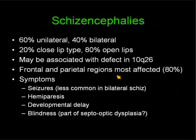Let's talk about schizencephaly. 60% are unilateral, 40% are bilateral. 20% are closed lip and 80% are open lip type. I showed you a case that is not that common — a bilateral closed lip. They may be associated with a defect in chromosome 10. The areas most affected are the frontal and parietal lobes, and the symptoms include seizures. Curiously, seizures tend to be less common and less prominent when schizencephaly is bilateral than when it is unilateral. Patients tend to have hemiparesis, developmental delay, and some may have blindness. If a patient with schizencephaly has blindness, some consider that part of the spectrum of septo-optic dysplasia, but I am not sure that that is true.